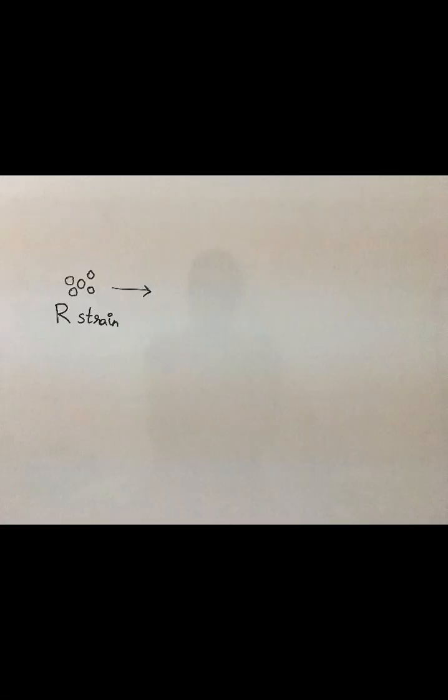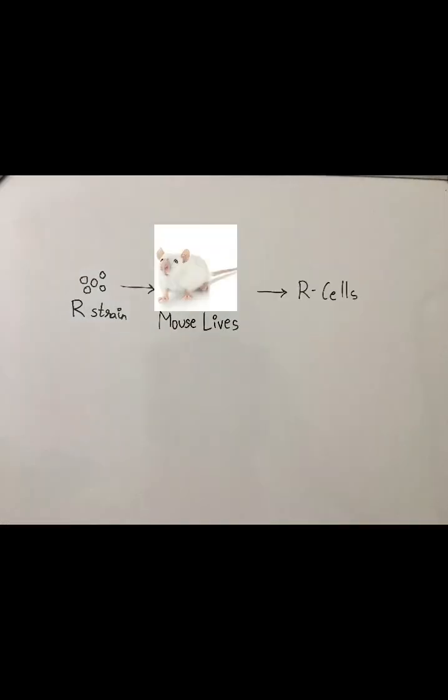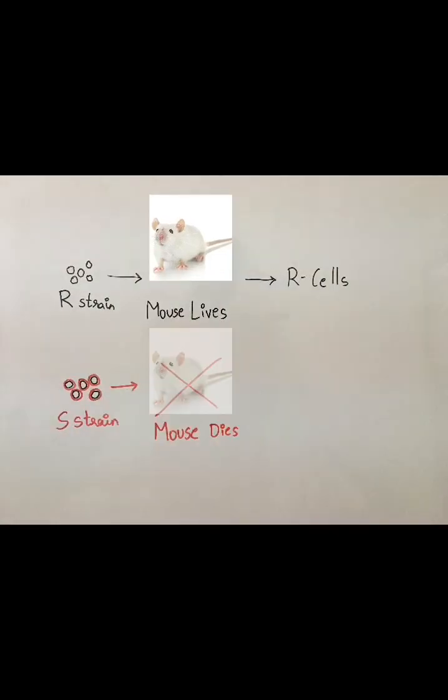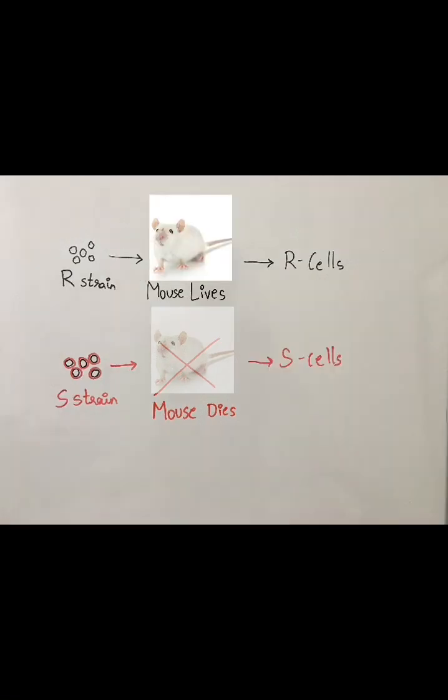He injected live R-strain cells into the mouse, and it survived. He later extracted R-cells from the mouse. When he injected the virulent S-strain cells, the mouse died due to pneumonia. He later extracted the S-cells from the dead mouse.